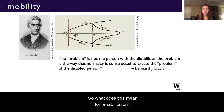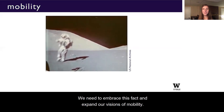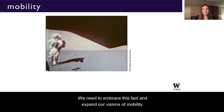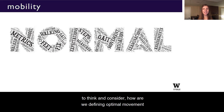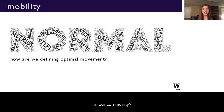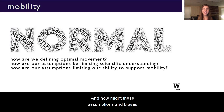So what does this mean for rehabilitation, and specifically mobility? I think we all know normal walking, or even walking itself, is definitively not the best solution for some bodies and environments. We need to embrace this fact and expand our visions of mobility. Today I'm going to give a few detailed examples from our work about how we have been starting to question and reimagine these assumptions. I hope you use these examples to consider how we define optimal movement, what the history of these definitions is, and how our collective assumptions and biases may be limiting our scientific understanding and ability to support care and mobility across the lifespan.